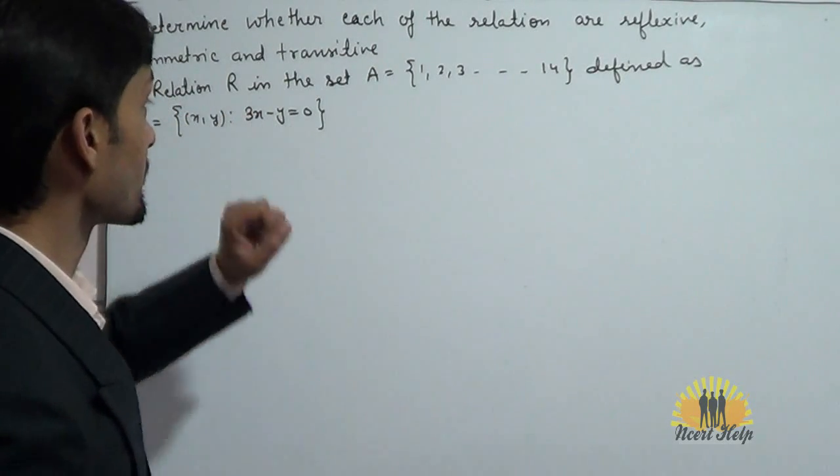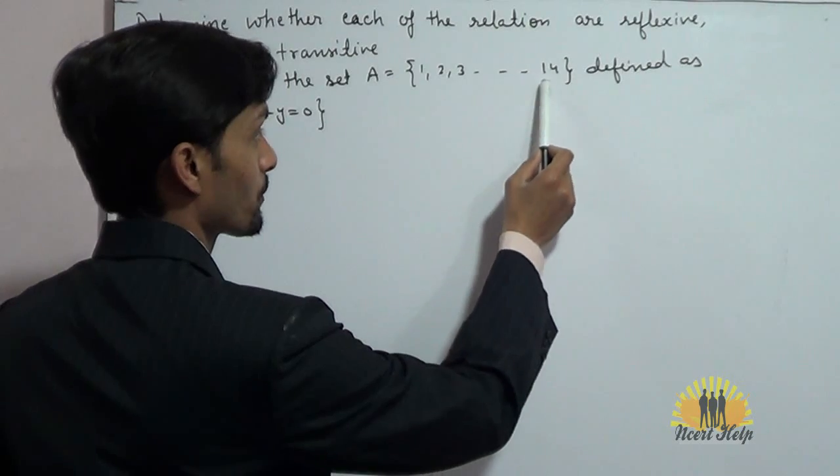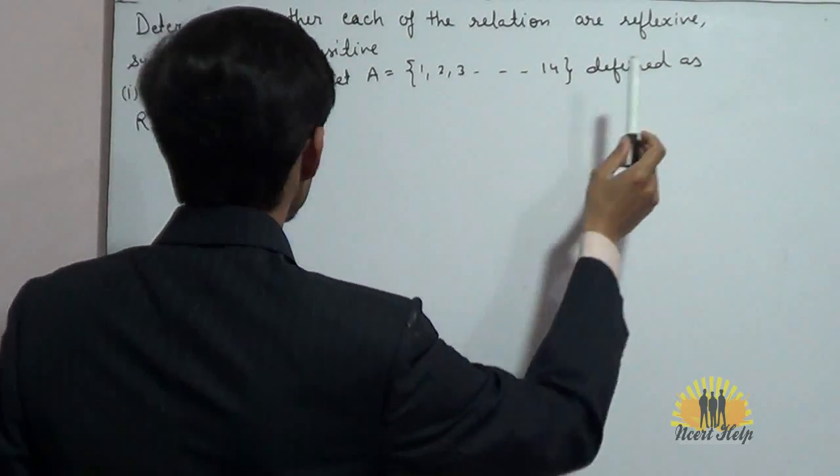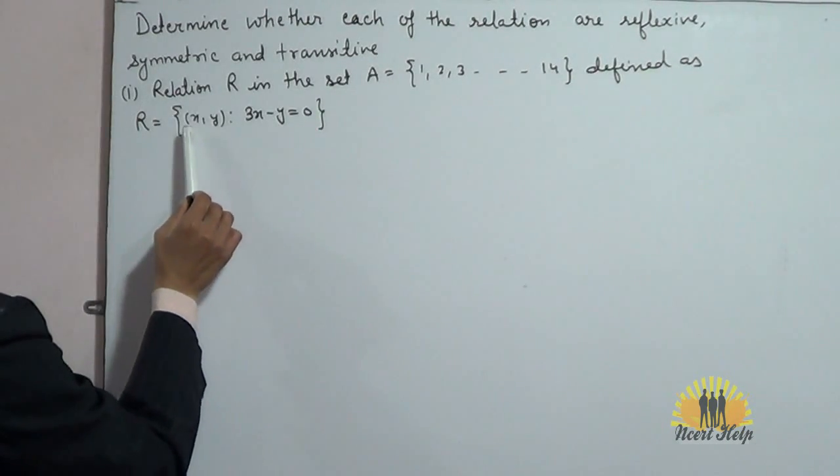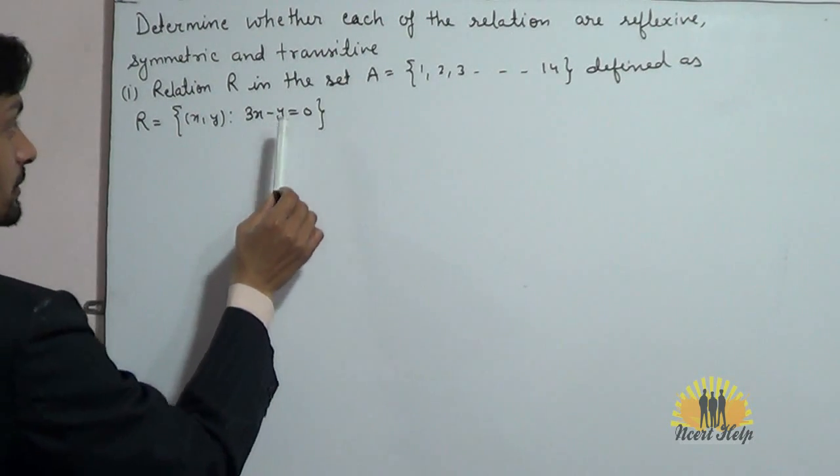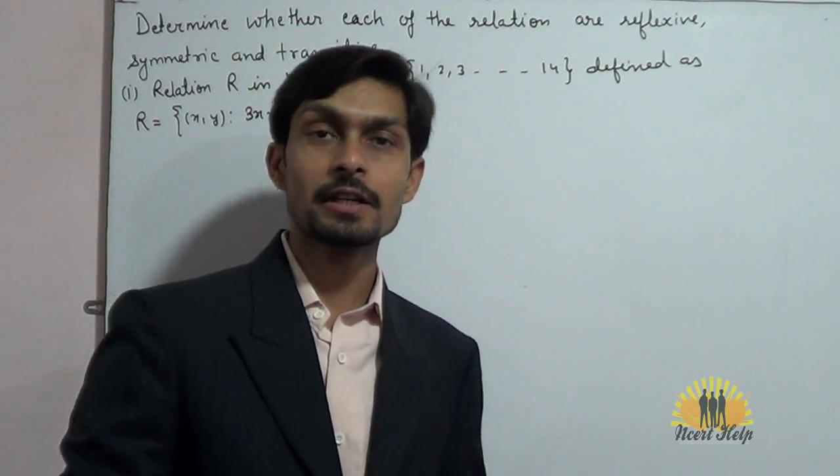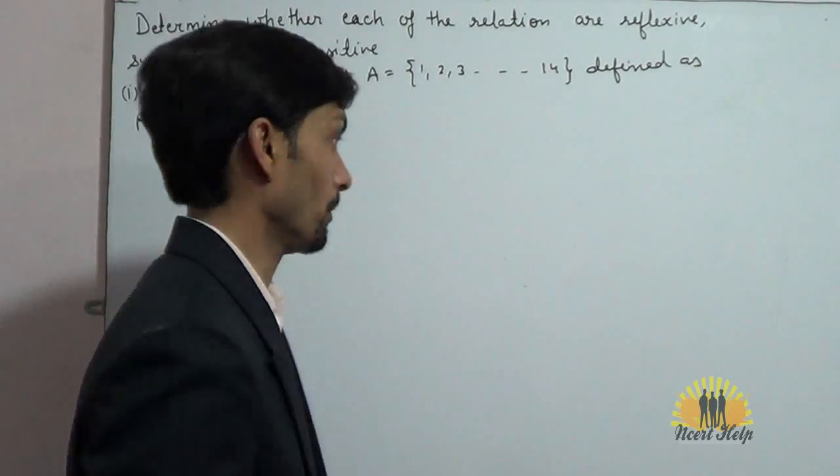Our relation R is defined on the set A which contains 1, 2, 3 up to 14, defined as R equals ordered pair (x, y) such that 3x minus y equals 0. First of all, we will convert this relation into roster form.